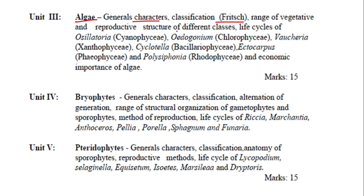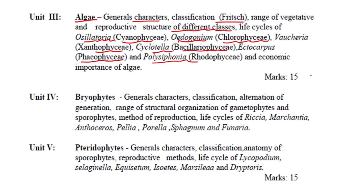Unit 3 covers algae: general characters of algae, classification proposed by Fritsch, range of vegetative and reproductive structures of different classes, and life cycles of Oscillatoria (Cyanophyceae), Oedogonium (Chlorophyceae), Vaucheria (Xanthophyceae), Cyclotella (Bacillariophyceae), Ectocarpus, and Polysiphonia (Rhodophyceae), and the economic importance of algae. This unit will also carry 15 marks.